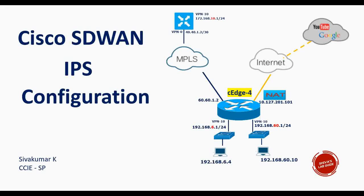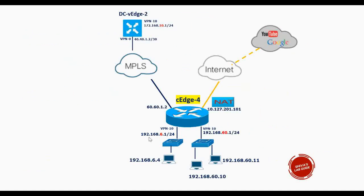In this video I'm going to show you how to configure Cisco SD-WAN IPS — Intrusion Prevention System. This is the setup I have in the lab for this demo, the same setup we used for zone-based firewall. It has one interface to MPLS, one interface to internet, and two LAN interfaces both in VPN 10.